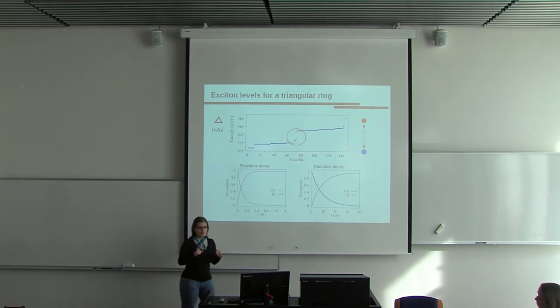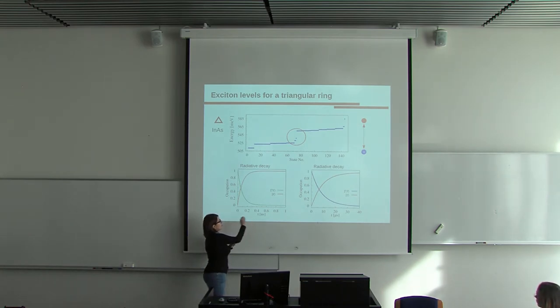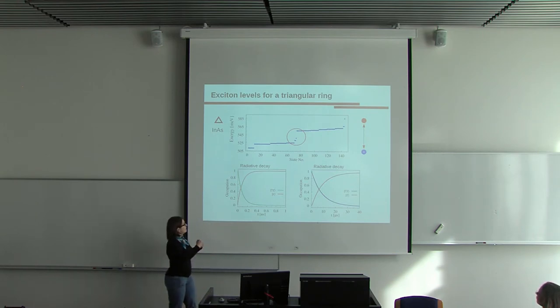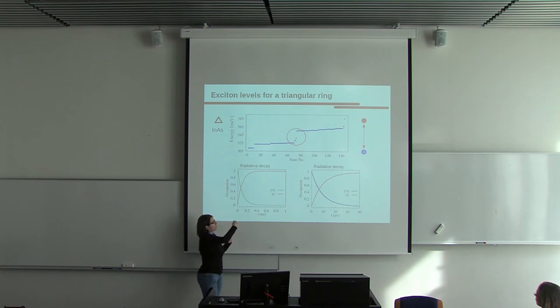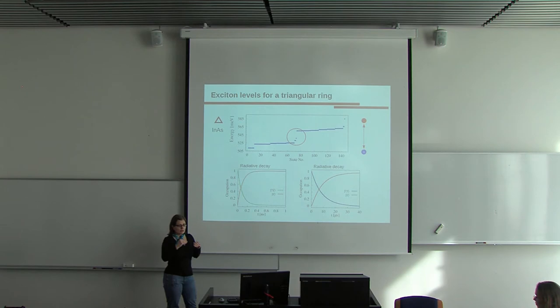That is, the time needed for excitons to recombine and release a photon is shorter than one nanosecond. In other words, the system needs less than one nanosecond to return to its ground state, which is no excitons, which means that the valence band is fully occupied.